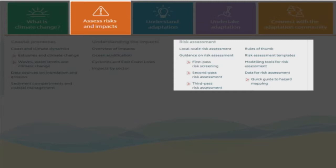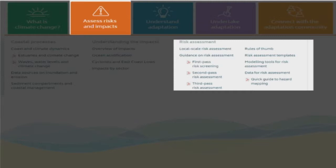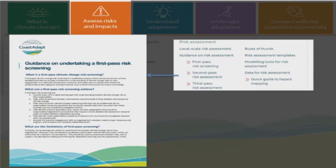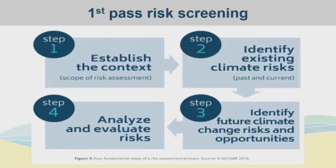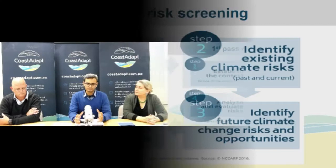In Coast ADAPT we have a section called risk assessment that gives you access to detailed guidelines for all these different levels of risk assessment. This also provides other information like available templates, tools and data that you can use for this purpose. It also provides a useful guide which can help you identify which map is appropriate to use in a particular type of risk assessment. That's the overview of the risk assessment process in Coast ADAPT.